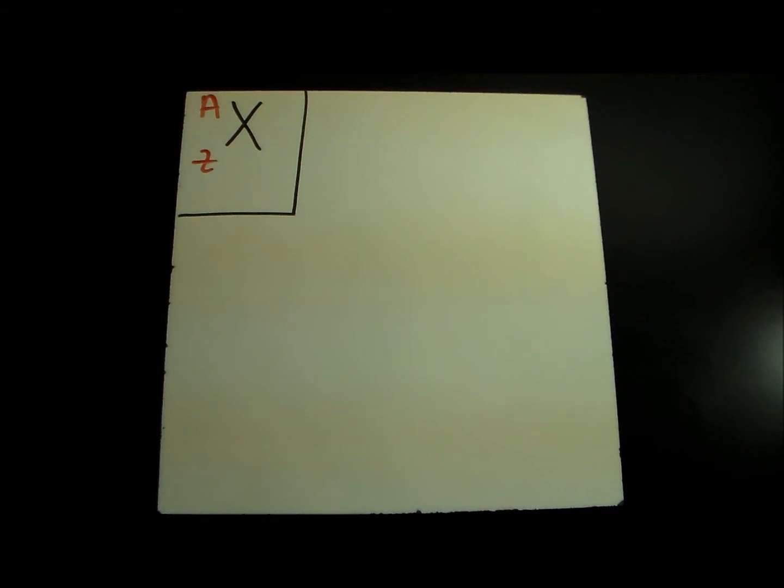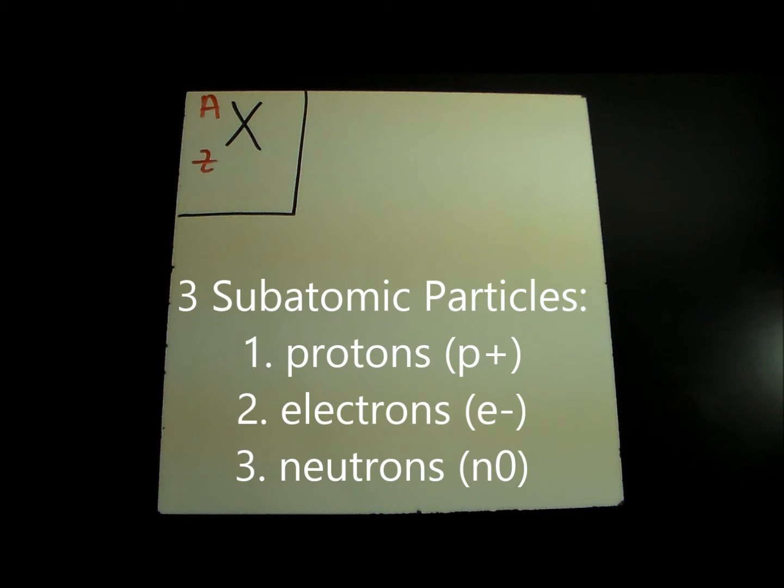But what's the point of these numbers? Well they help determine the number of three subatomic particles that each element has: protons, electrons, and neutrons.